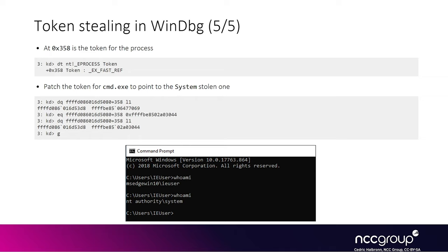We dump out the original token pointer using the dq command from the cmd.exe process and see it ends with 0x7069. Then we edit this token pointer with the eq command to replace it with the one from the SYSTEM process ending with 0x044. We confirm by re-reading with dq that it now points to the modified value. Then we press go in the debugger and use our command prompt again — typing whoami shows that cmd.exe is now running as NT AUTHORITY\SYSTEM.